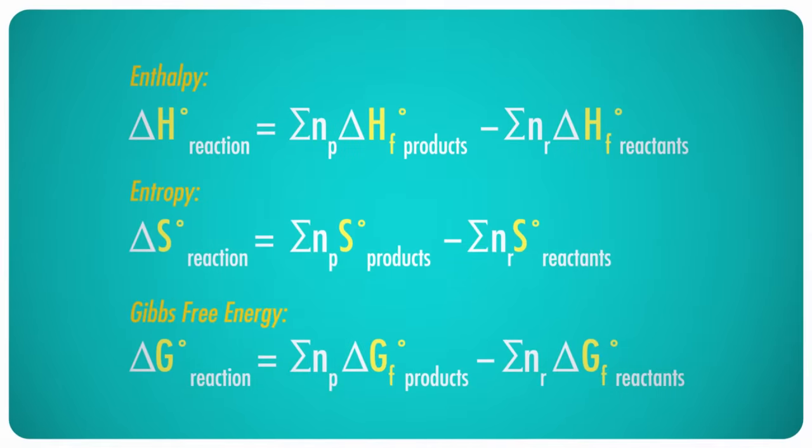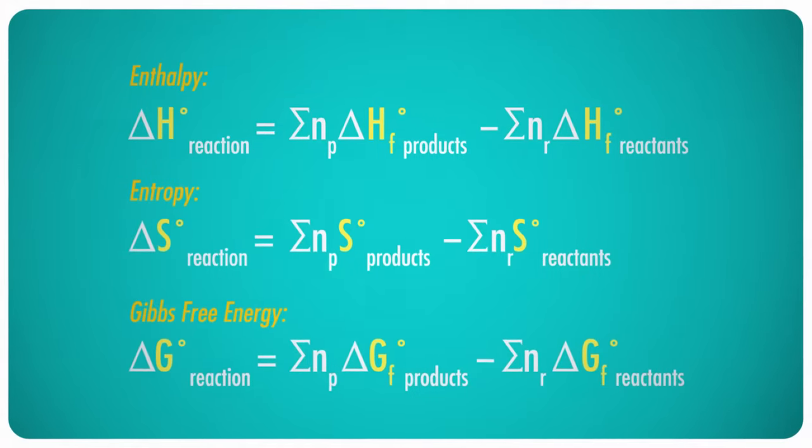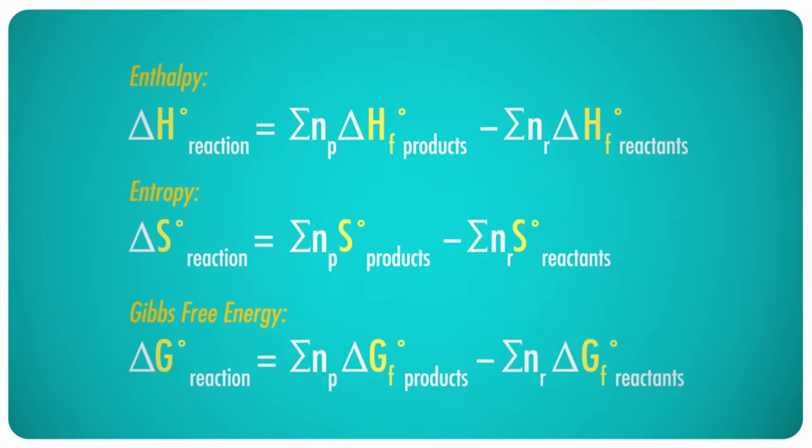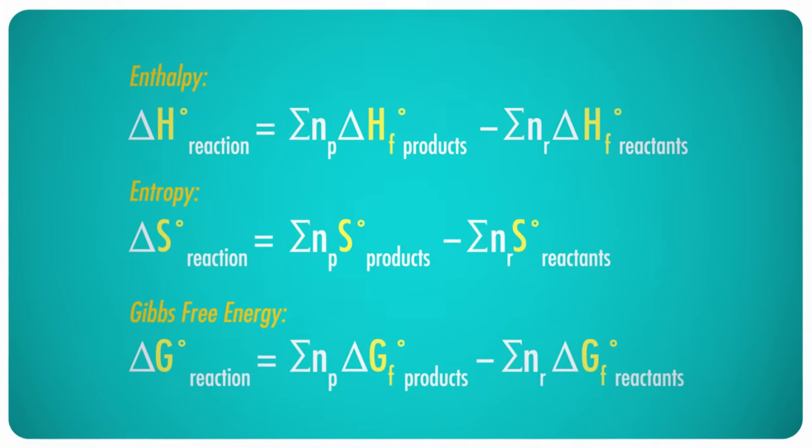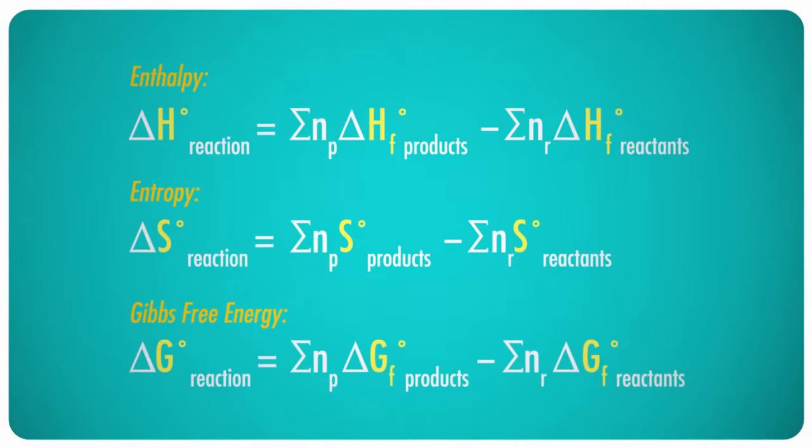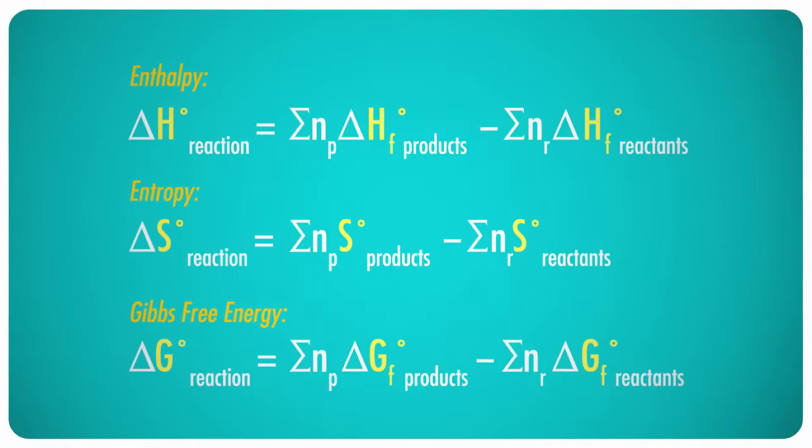We simply substitute delta G, which stands for Gibbs free energy, for delta H or S. The standard free energy of formation is the change of free energy that occurs when a substance is formed from its elements in a standard state. It's analogous to the standard enthalpy of formation that we use to calculate change in enthalpy. Like enthalpy and entropy, we can't directly measure the free energy change of a whole reaction.